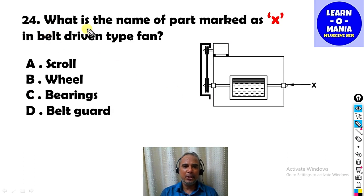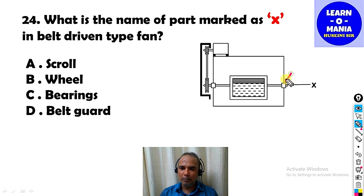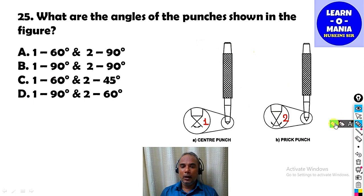Next MCQ: What is the name of part marked X in a belt-drive type fan? In an AHU, there is a belt-driven fan — the motor has a driver pulley, the blower has a driven pulley, connected by a belt. The answer is option C — bearing. There is a bearing on each side of the shaft.